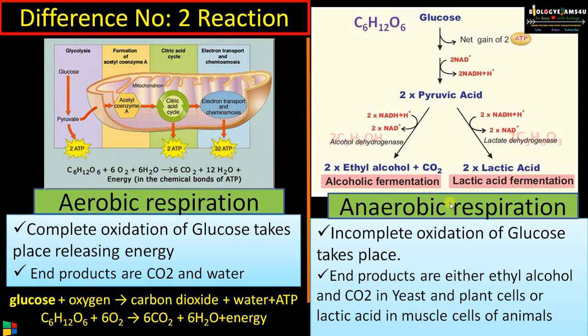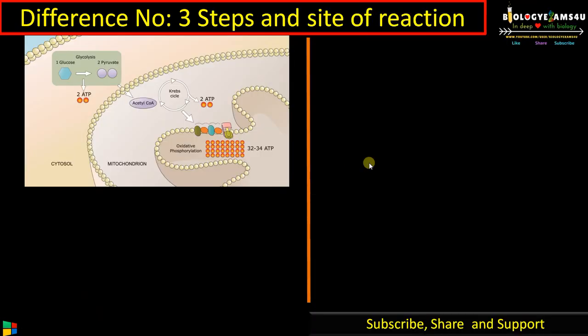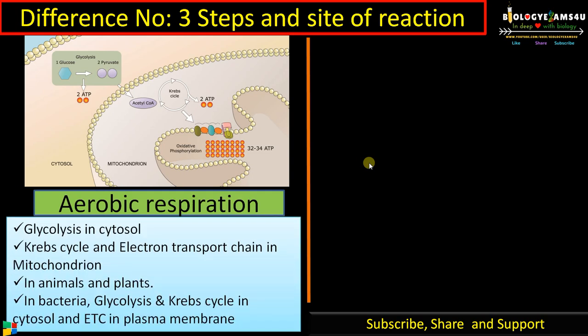Here you can see the oxidation is incomplete; much of the energy is locked in this chemical. This is partially oxidized. Difference number three regarding the steps and site of reaction: in aerobic respiration, glycolysis occurs in the cytosol, forming pyruvate.